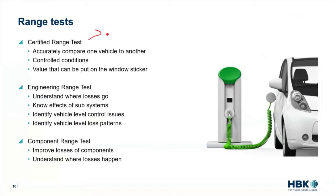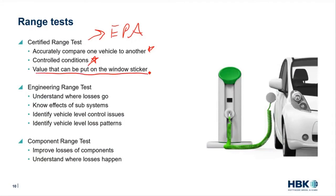There's the certified test. This is the one that the EPA or the governing body is going to do. This is the test to tell us your range and efficiency, what they approve, and what's going to allow us to accurately compare one vehicle to another. This gives us controlled conditions so we know we're comparing apples to apples. This is the value that can be put on the window sticker — what we can market, advertise, and what consumers can make educated decisions on.